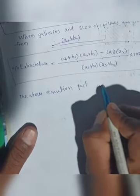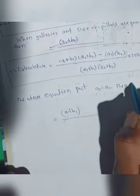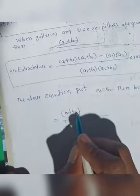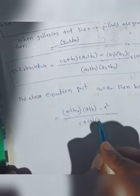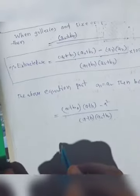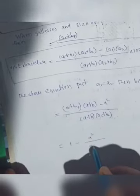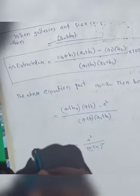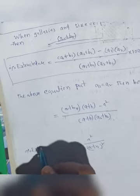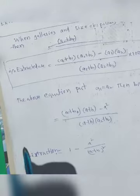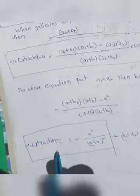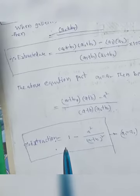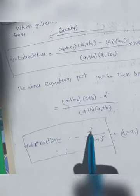Putting a1 equals a2 equals a, and b1 equals b2 equals b, we get: (a plus b)² minus a², divided by (a plus b)², into 100. This simplifies to 1 minus a² divided by (a plus b)² — which is the final formula for the percentage of extraction when a1 equals a2 and b1 equals b2.